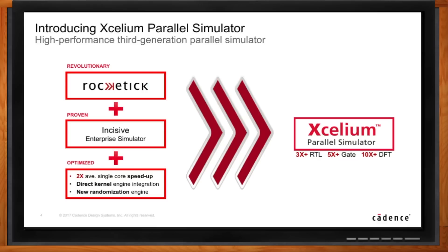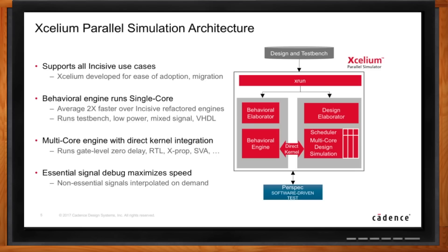Let's dive into some details of the Accelium solution. Many of your block and IP level tests will still run in single core mode — you don't get enough advantage in multi-core mode to necessarily make use of that. But in single core mode, you'll get approximately a 1.5 to 2x improvement over what you're used to in the latest version of Incisive. The beauty is that you don't make any changes to your design. Your test bench stays the same, your way of interacting for debug stays the same, and there are no new limitations to how you create your design, create your test bench, or do your debugging or regressions.